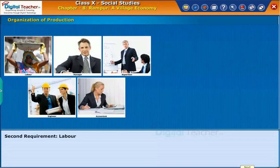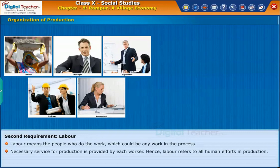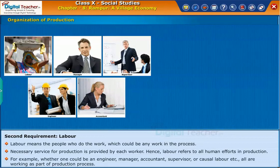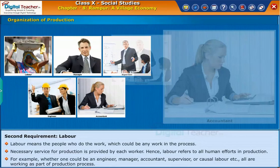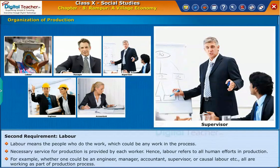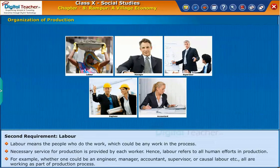The second requirement is labor. Labor means the people who do the work, which could be any work in the process. Each worker provides necessary services for production. For example, one could be an engineer, manager, accountant, supervisor, or casual labor — all are working as part of the production process.